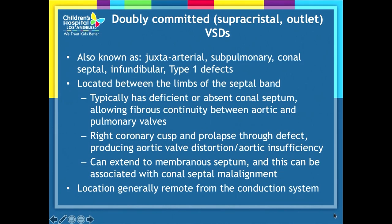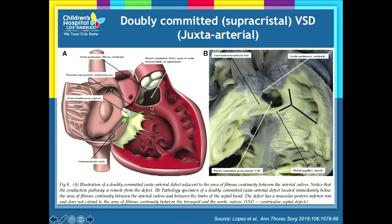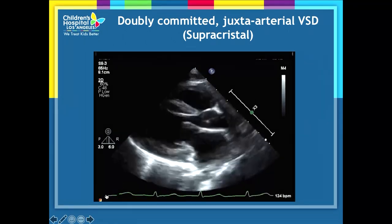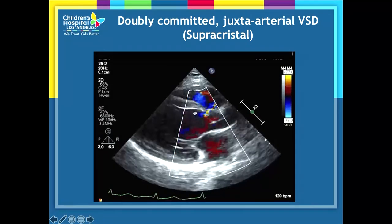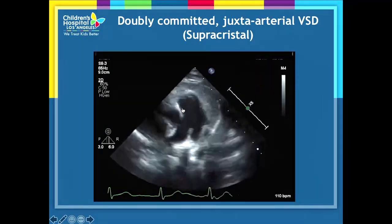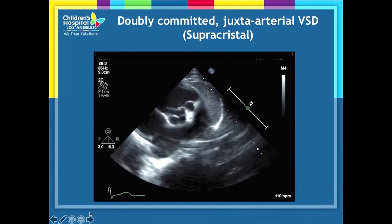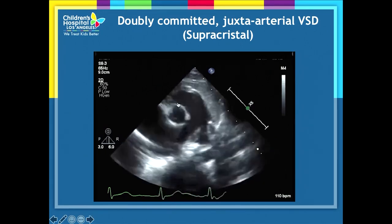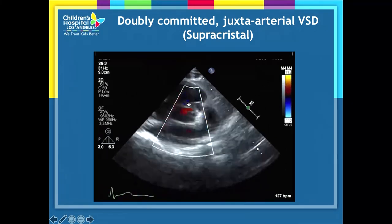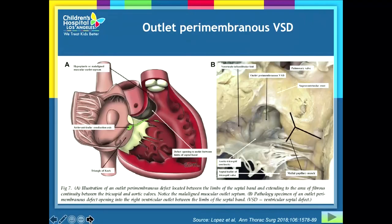Doubly committed supercrystal VSDs — also known as juxta-arterial, subpulmonary, or conal septal VSDs — are located between the limbs of the septal band with absent conal septum. This allows the right coronary cusp to prolapse through the defect. There is fibrous continuity between the aortic and pulmonary valves, and essentially no conal septum at all. On the parasternal short axis, this VSD is located between 12 and 2 o'clock.